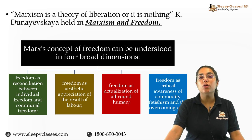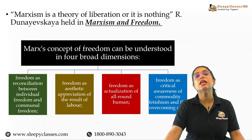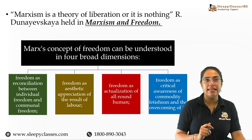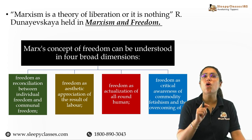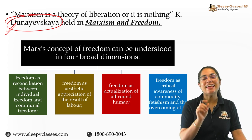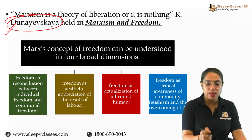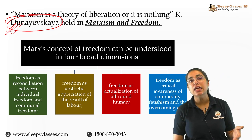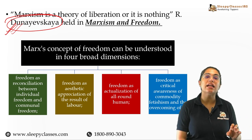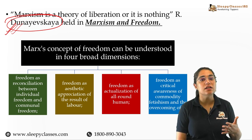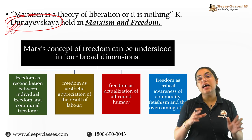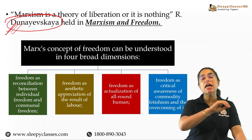Now we go towards Marx's idea of freedom. Here you can use a number of quotes — if you remember them, you can find many big marks in the exam. There is a very important Marxist philosophy scholar whose book was called 'Marxism and Freedom.' In this book, they write that Marxism is a theory of liberation, a theory of freedom — or it is nothing. So the main idea is human emancipation, human liberation, human freedom.